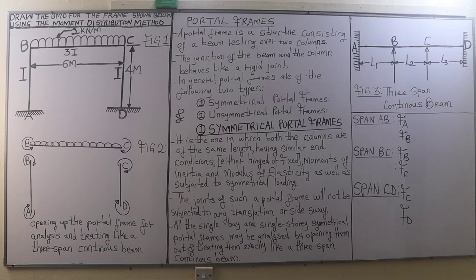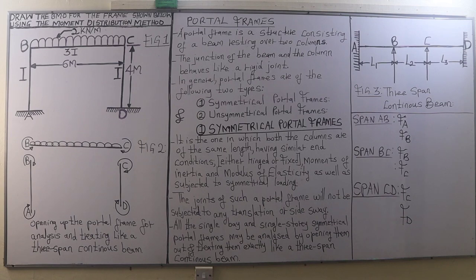All single-bay, single-storey symmetrical portal frames may be analyzed by opening them out and treating them exactly like a three-span continuous beam. In Figure 2 we have a free body diagram of the portal frame opened up for analysis. An example of the equivalent three-span continuous beam is shown in Figure 3, fixed at A and D, with simple supports at joints B and C, having three spans L1, L2, and L3.